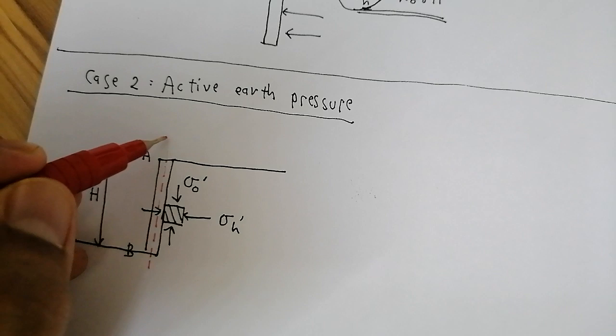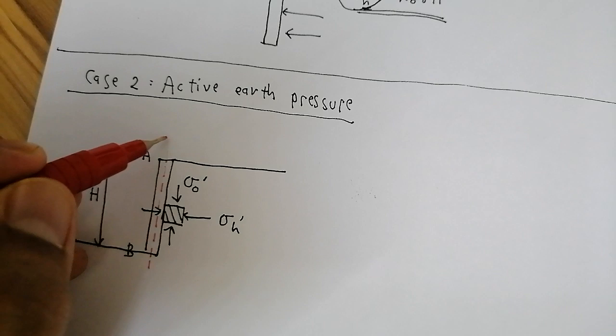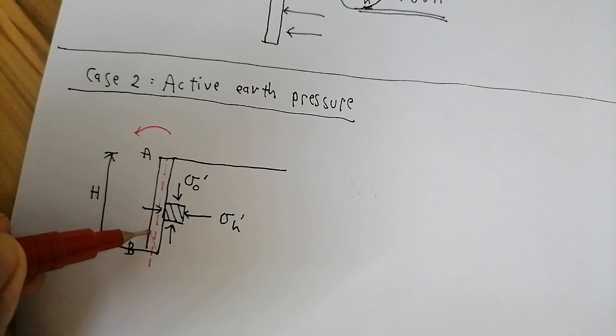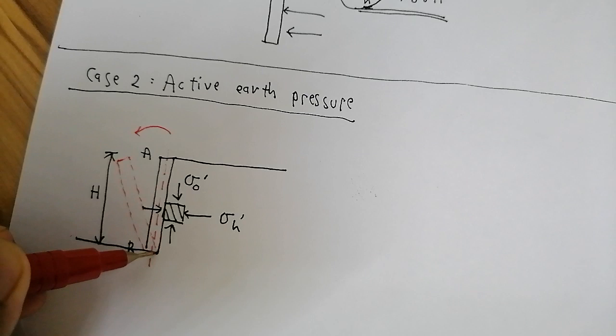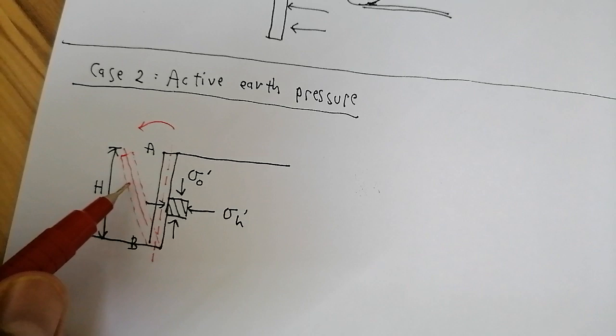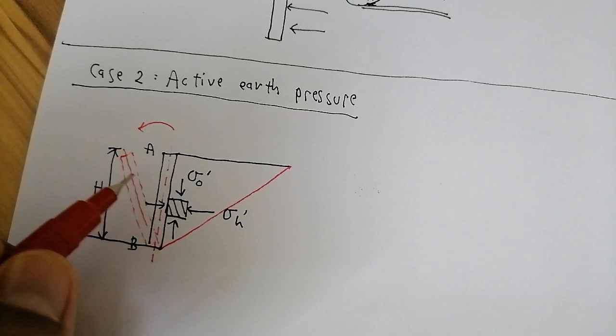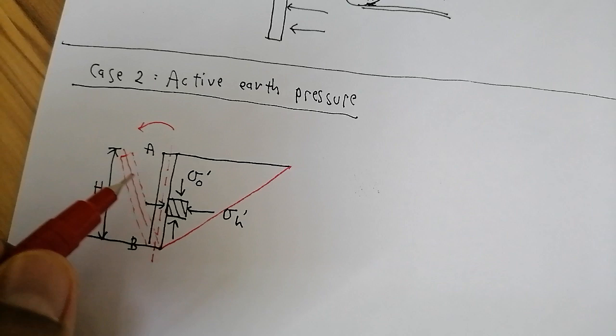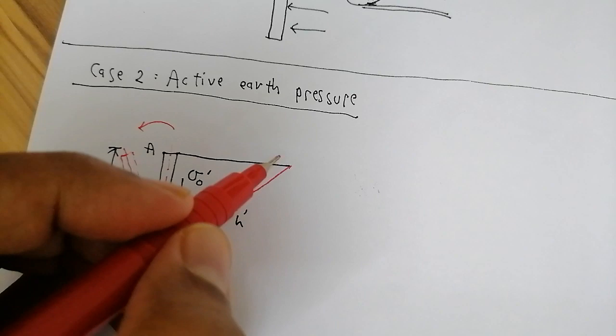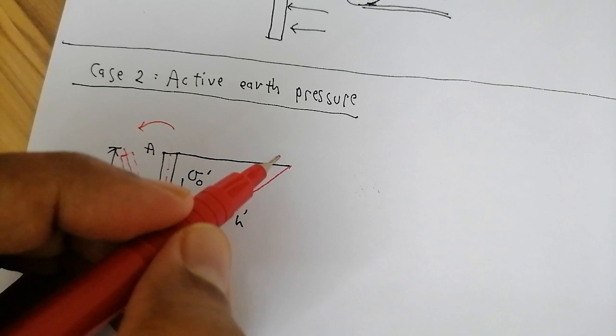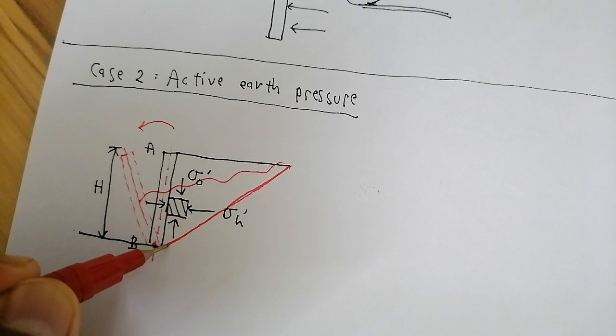With active earth pressure, the retaining wall moves away from the soil — this is its new position after movement. You now have a triangular soil mass here. When the wall rotates about the bottom to this new position, the triangular soil mass will experience sliding downwards along this failure plane.